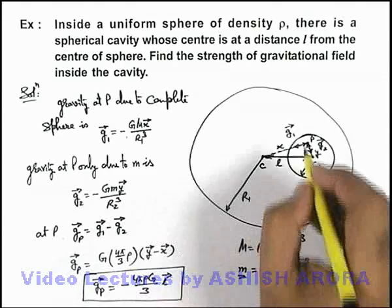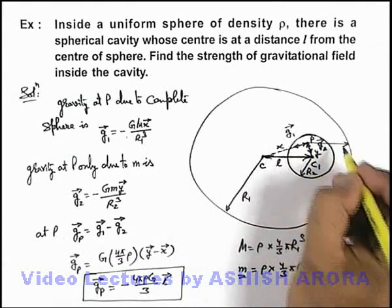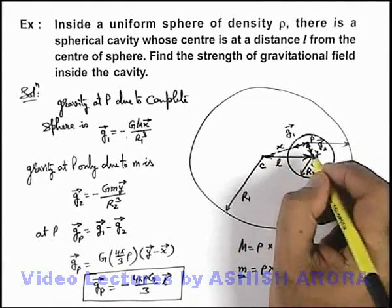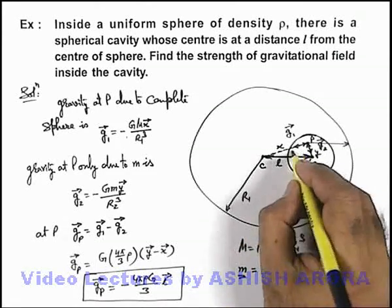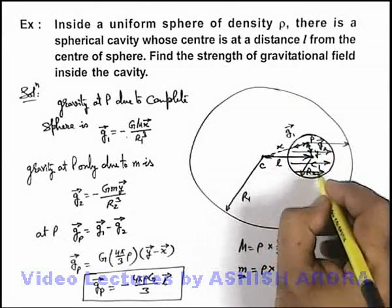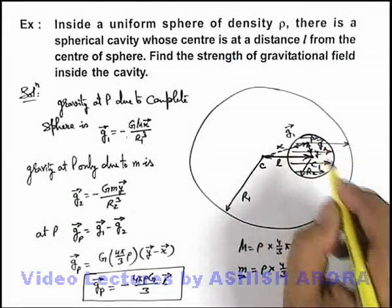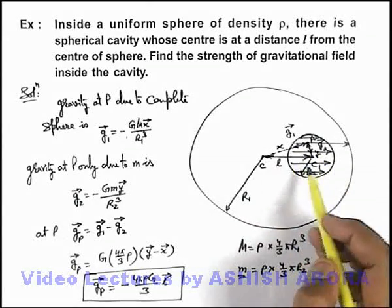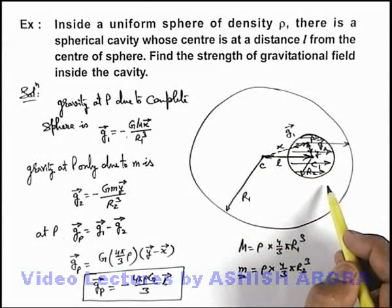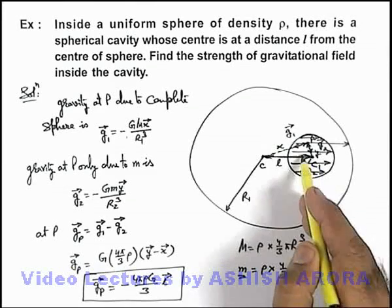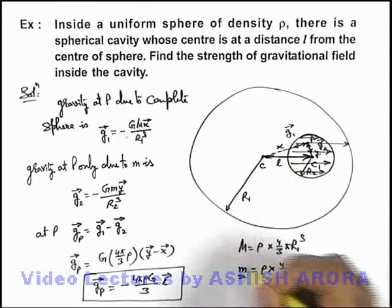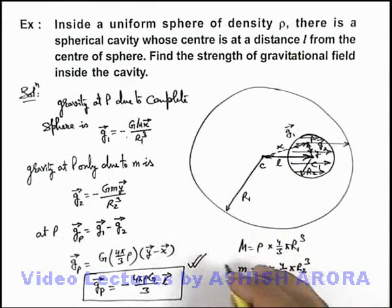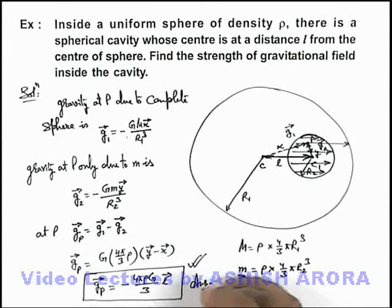So we can see at point P gravitational field exists in the direction of l vector. It is independent of x and y, that means inside cavity everywhere the gravitational field which is developed by the mass of this sphere will be uniform and it is along the direction of l vector with magnitude given by this. So that'll be the answer to this problem.